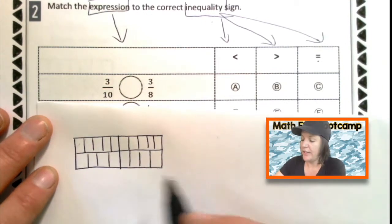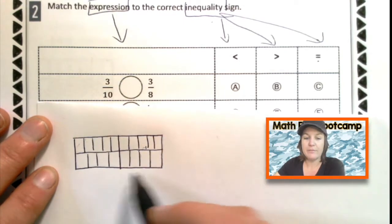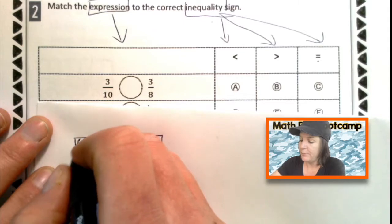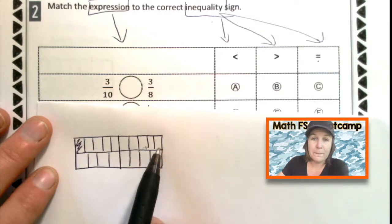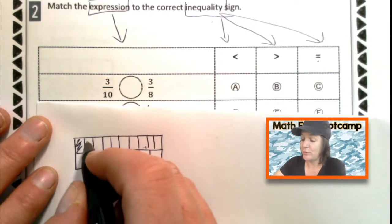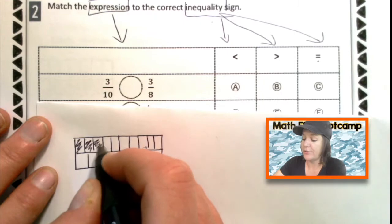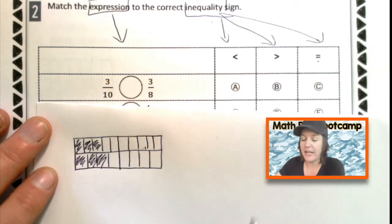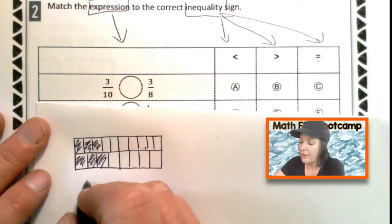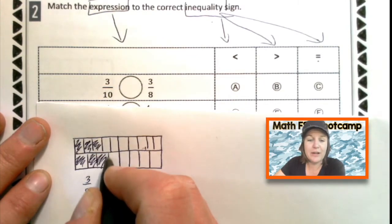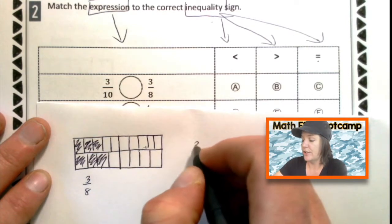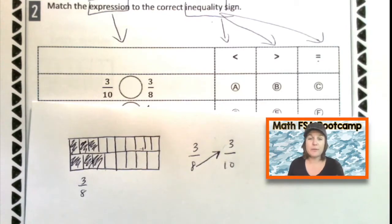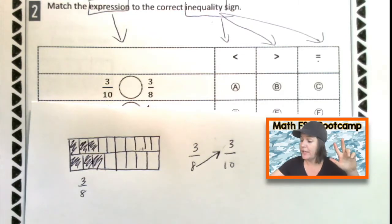So first we have three tenths and three eighths. So here I have my tenths and here I have my eighths and they look kind of similar. But I do know that the ten pieces that it takes to make up that one whole, they are smaller than the eighths. So really three eighths should be larger. I'm shading in three in each because I've got three eighths and three tenths. And look, the three eighths goes a little bit longer than three tenths.